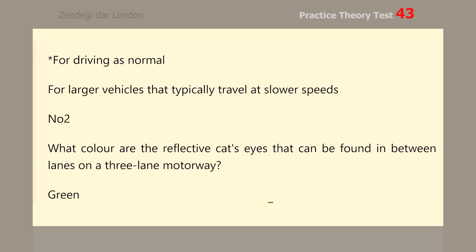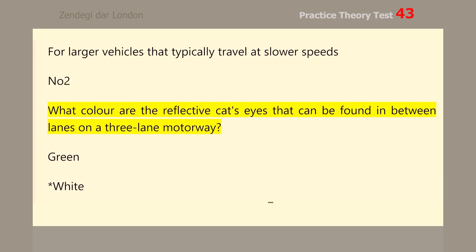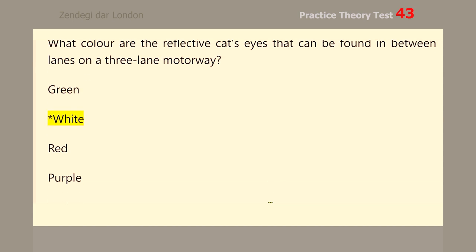Number 10. What color are the reflective cat's eyes that can be found in between lanes on a three-lane motorway? White.